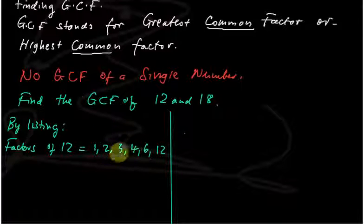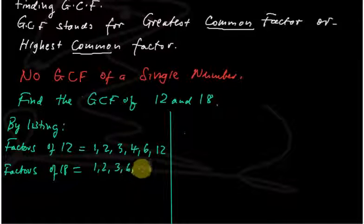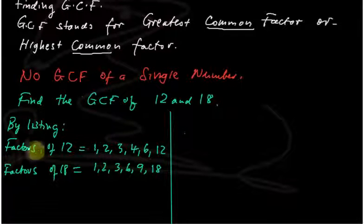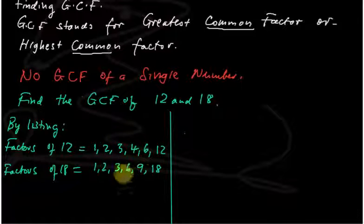Those are the numbers which, when multiplied together, give us 12. Now, the factors of 18 are: 1, 2, 3 — 4 is not a factor of 18, 5 is not — but 6 is, 9 is, and 18 itself. We now find the common factors between both lists. 1 is common, 2 is common, 3 is common, but 6 is also common.